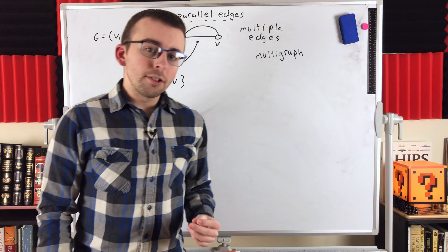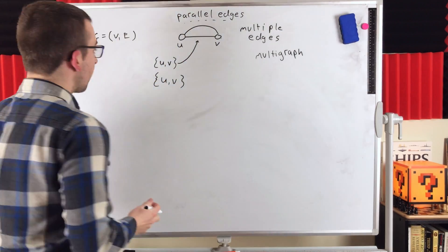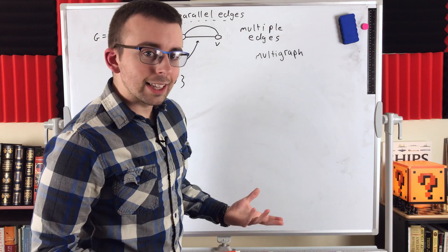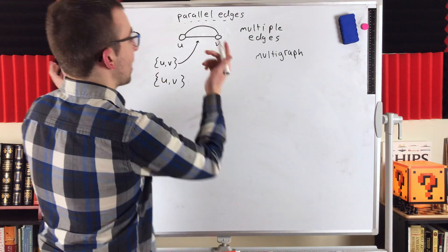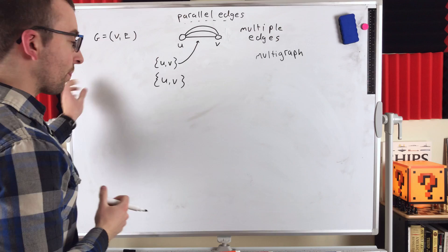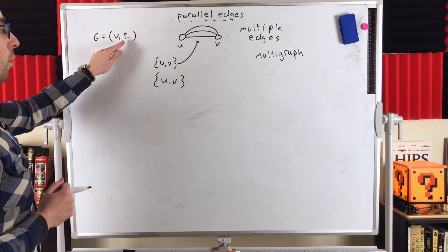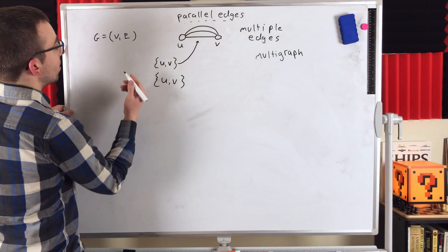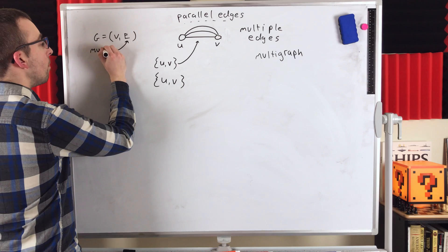Parallel edges are edges that join the same two vertices — their end vertices are the same. If we're allowing parallel edges between the same pair of vertices, we could have as many as we want: two, three, another edge joining u and v. So how do we actually capture this information? Your typical set doesn't allow for repetition, so what we actually need for a multi-graph is we need our edge set to be what's called a multi-set.